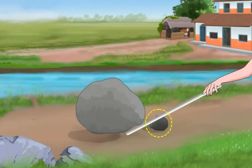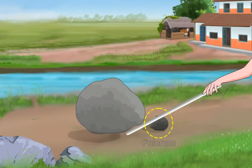The fixed point about which the lever can turn is called the fulcrum.